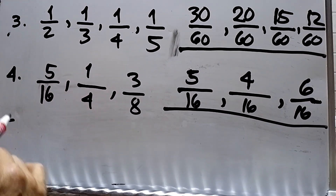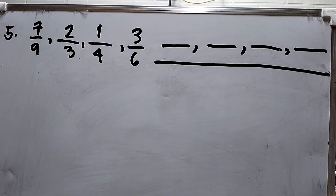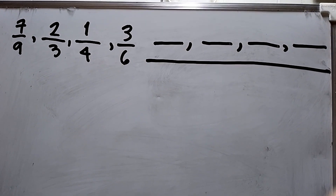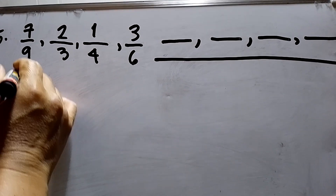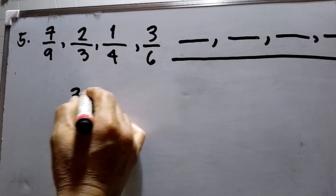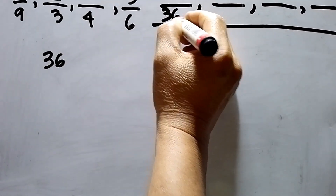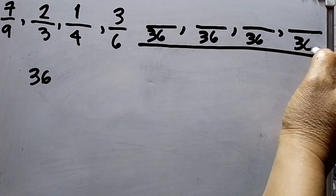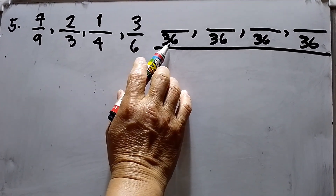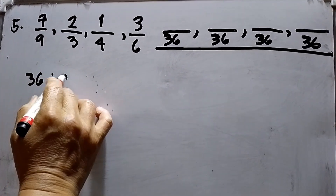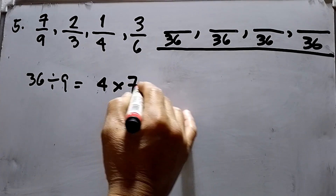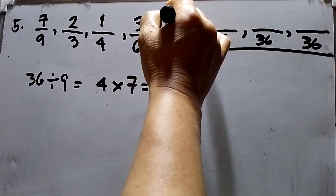Now the last example, number five. I have 7 over 9, 2 over 3, 1 over 4, and 3 over 6. I need to find the LCD between 9, 3, 4, and 6. We can use 36. 36 divided by 9 is 4, times 7 is 28. So the numerator for the first fraction is 28.